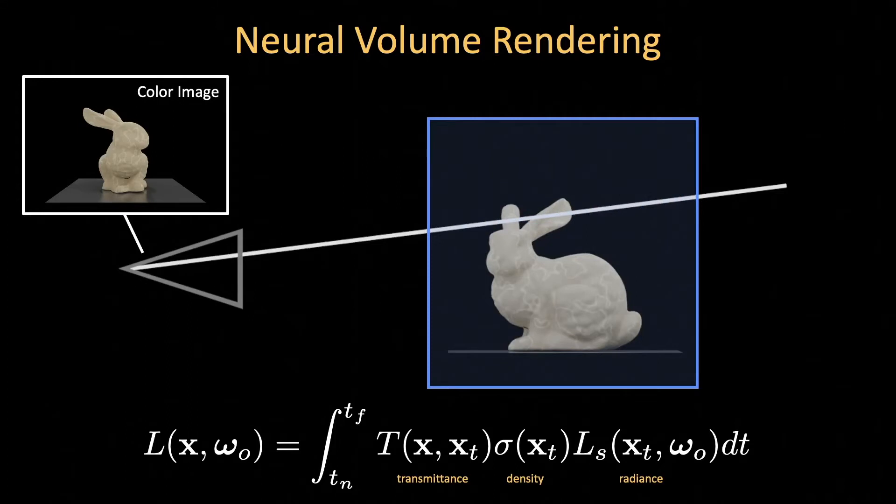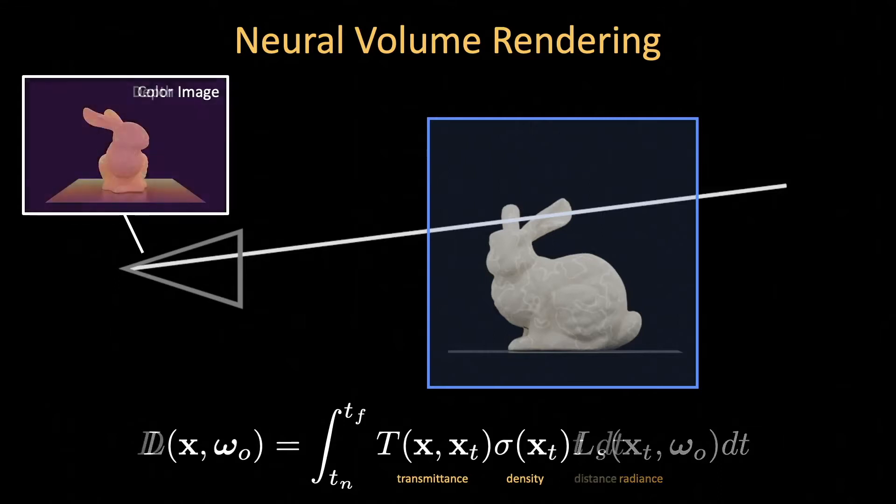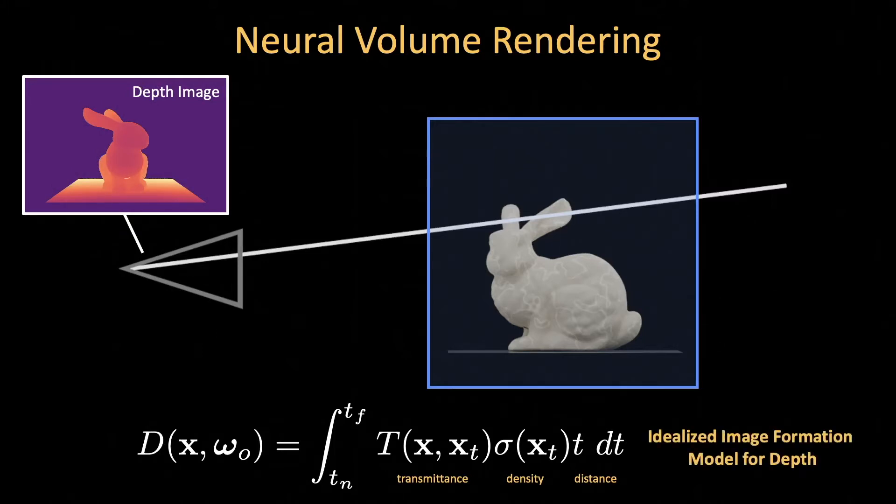This is a straightforward volume rendering technique, and through a few additional tweaks, it can even be used to synthesize images for unconventional cameras. For example, by replacing our radiance term with a distance term, this same integral can be used to render the scene's depth from the camera's perspective. In other words, this is an idealized image formation model for depth cameras.